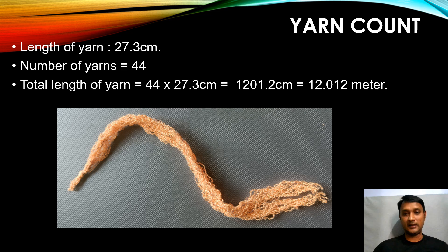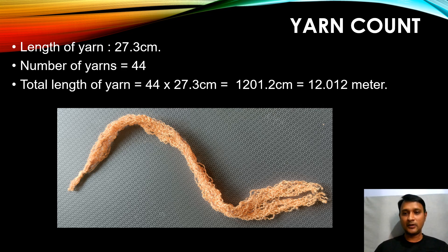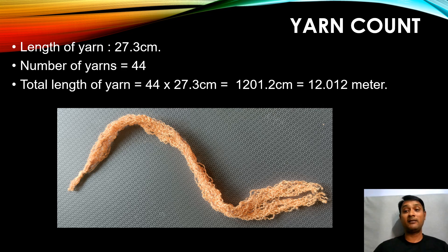For yarn count, the formula is: N = 0.59 × (length of yarn in meters) ÷ (weight of yarn in grams). I extend the cut from the 0th to the 101st needle and unravel the yarn. During the repeated loop length checks, I unraveled almost 44 yarns. The average loop length is 27.3 cm per 100 needles, so the total yarn length is 44 × 27.3 = 1201.2 cm, which is 12.012 meters.